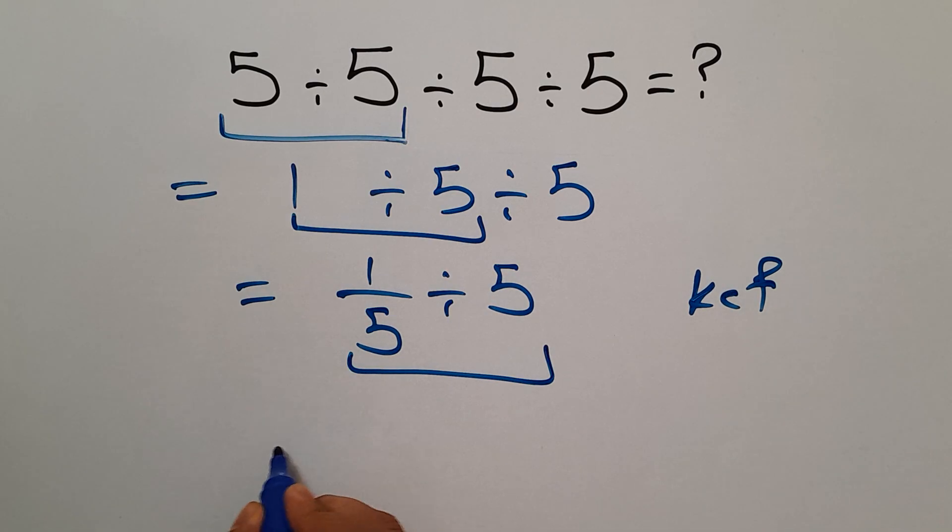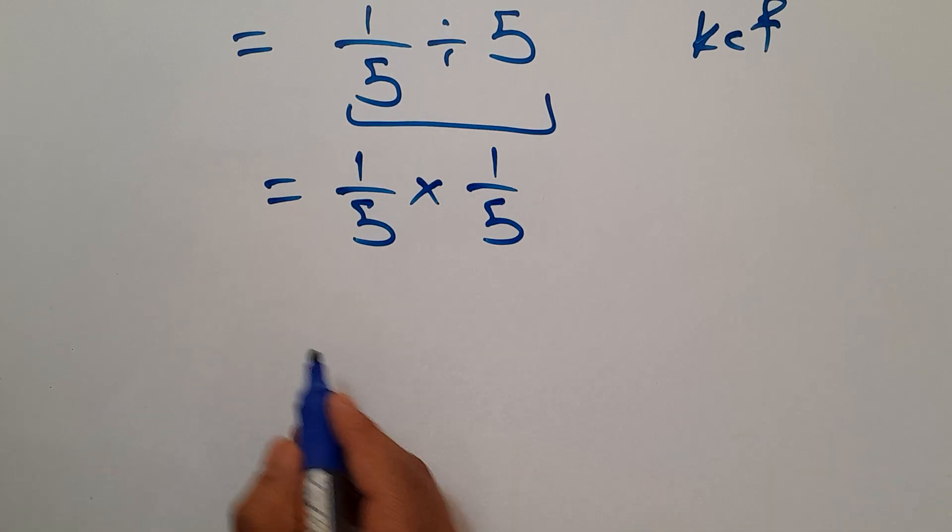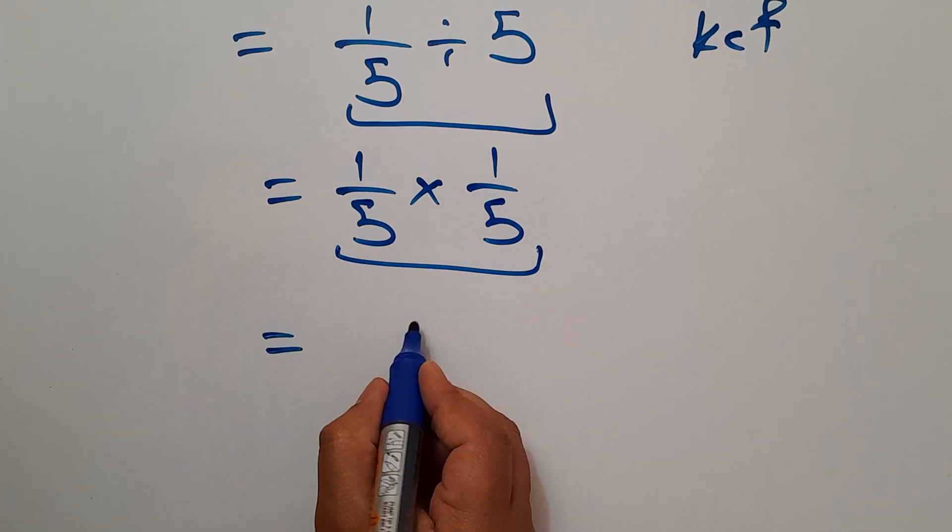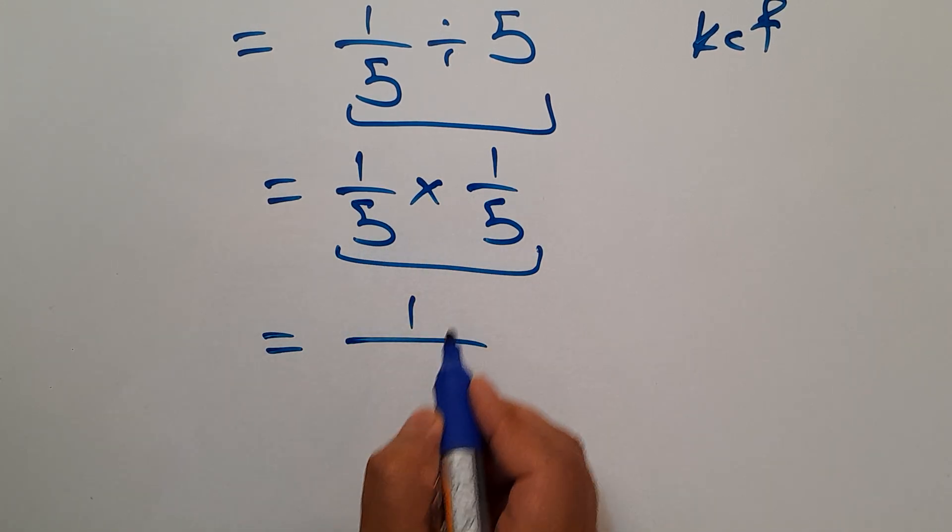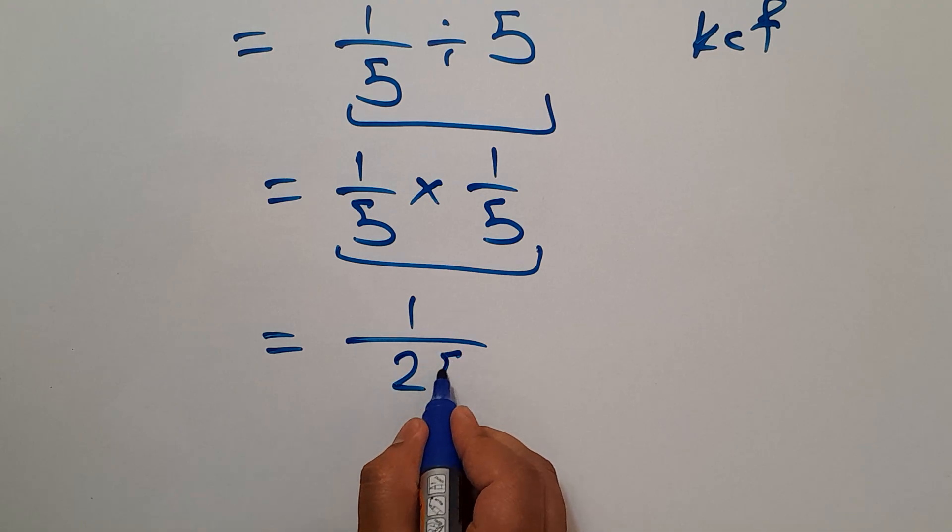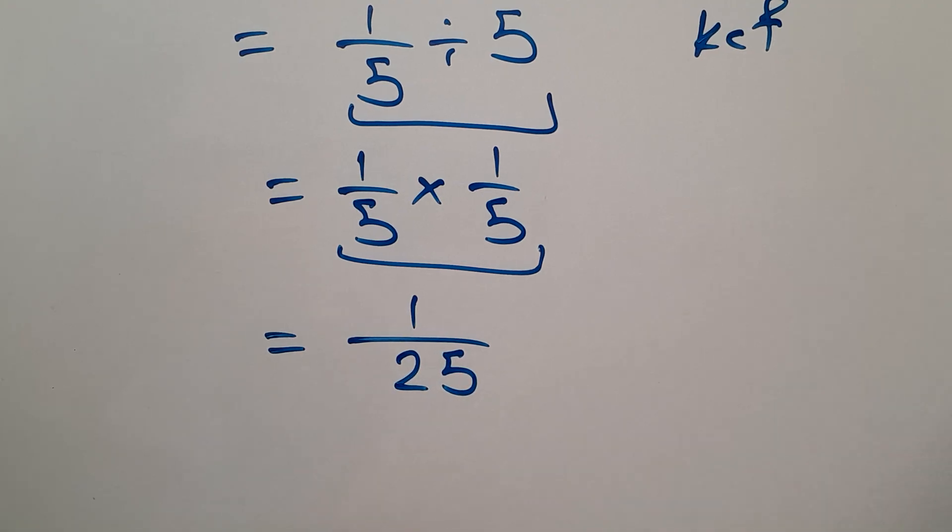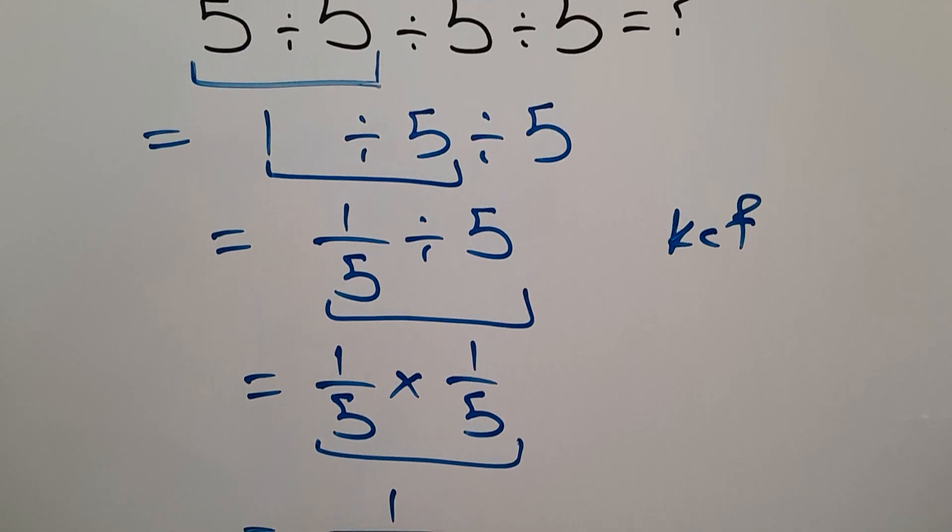...can be written as 1 over 5, then times 1 over 5. And this is equal to 1 over 5 times 5, which equals 25. So our final answer to this problem is 1 over 25.